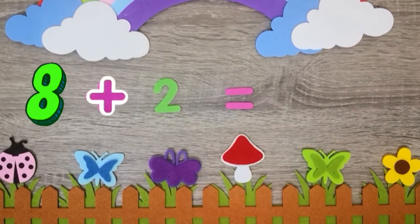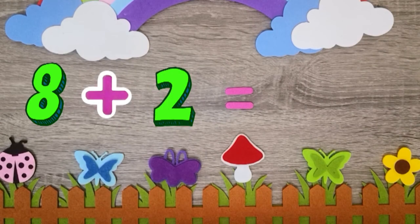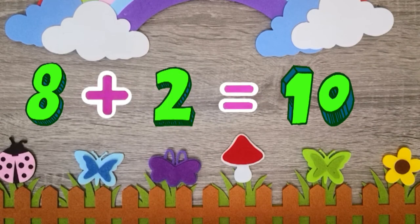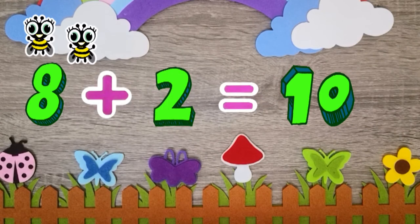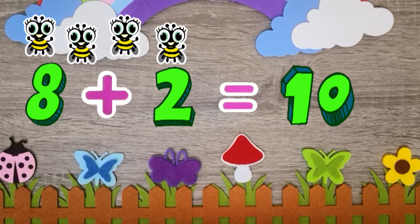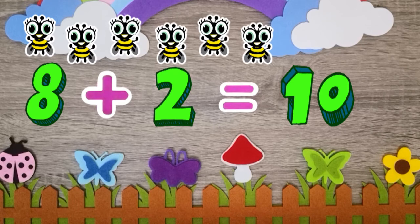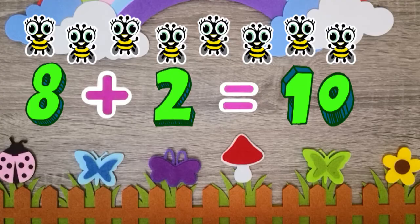8 plus 2 equals 10. 1, 2, 3, 4, 5, 6, 7, 8, 9, 10.